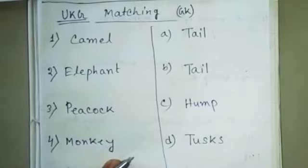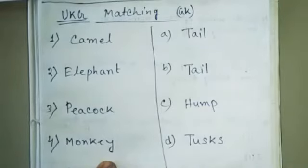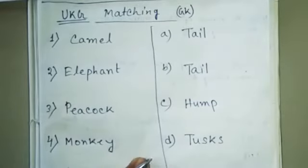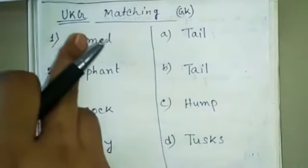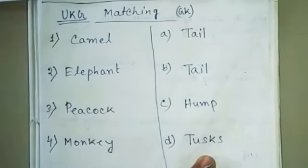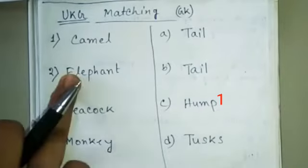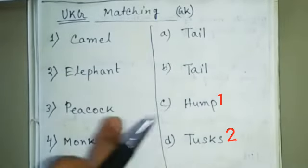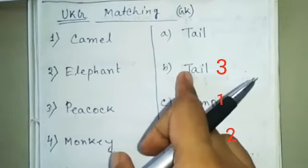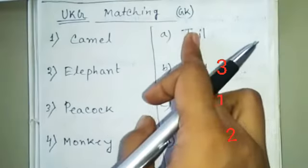Students, follow this. If you do not have your book, you can match this. Match this animal with its parts. Camel - hump. Elephant - tusks. Peacock - tail. Monkey - tail.